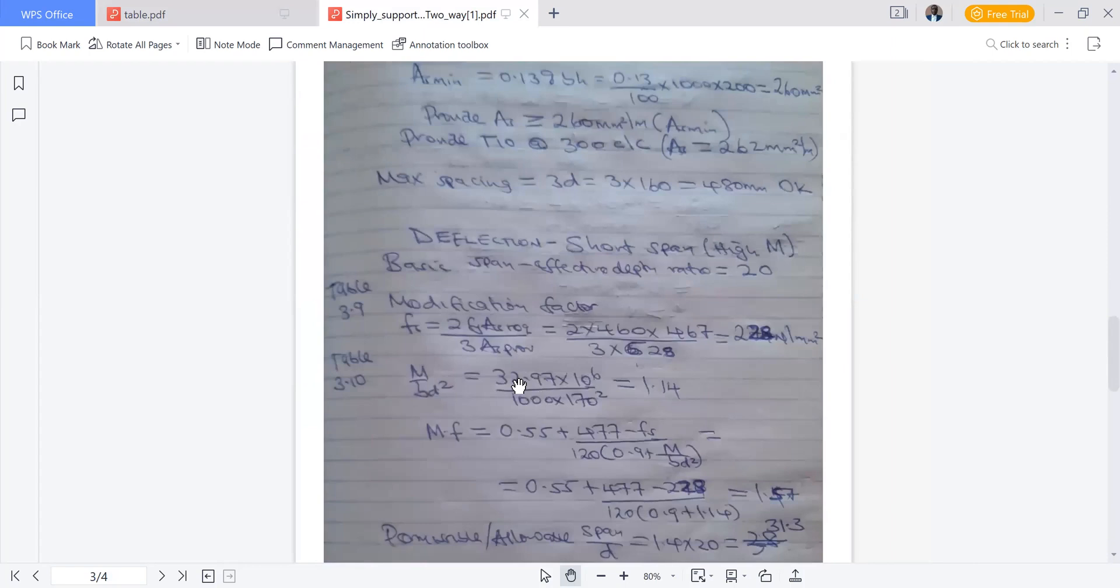We go to deflection. For simply supported two-way span, we only consider short span, because short span had the highest moment. The coefficient of moment along the short span is the highest, so it will have the highest moment. Moment is related to deflection. Basic span effective depth ratio from table 3.9 of BS8110 is 20.